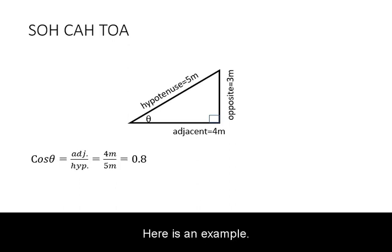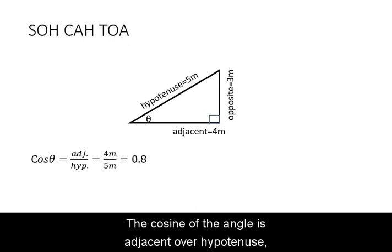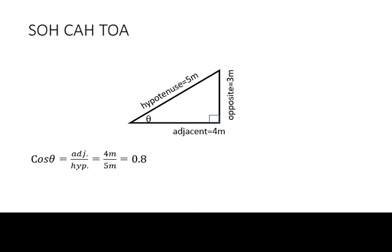Here is an example. Suppose we want to find out one of the acute angles for a 3-4-5 triangle. In this case, the angle is the one closest to the adjacent side of length 4 meters. The cosine of the angle is adjacent over hypotenuse, which is 4 meters divided by 5 meters, which gives us 0.8. To get the angle we take the inverse function of cosine on that ratio and get 36.9 degrees.